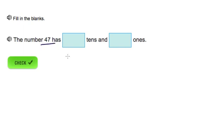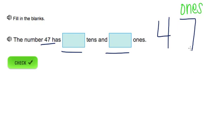The number 47 has blank tens and blank ones. So let's go ahead and write out the number 47. Remember our ones place is all the way to the right. So how many ones do we have? We have seven ones.